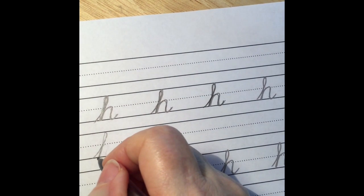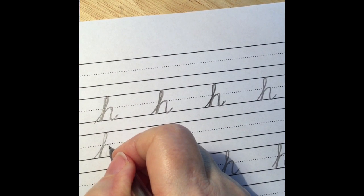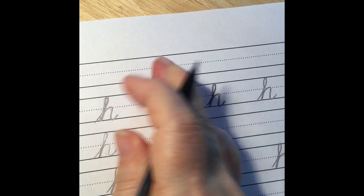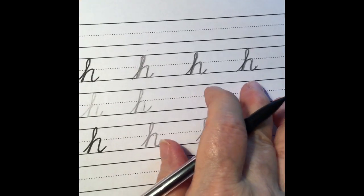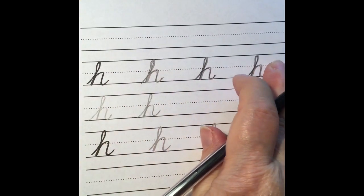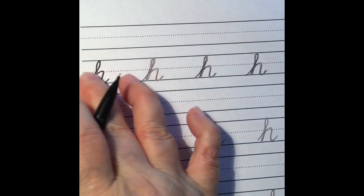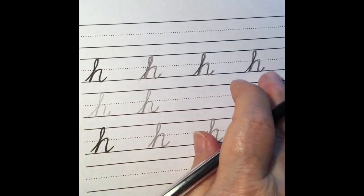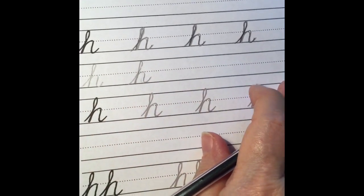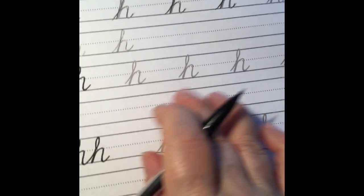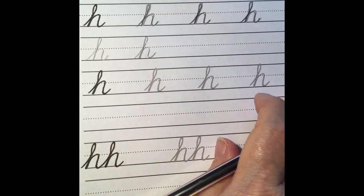We want that overcurve to be nice and straight. Now you're going to practice your tracing row and your row on your own, and another row to practice, and another row on your own. Then we will be ready to connect h's.